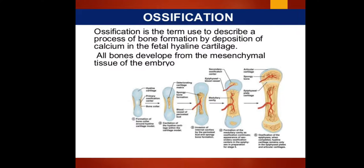Ossification is a term used to describe the process of bone formation by deposition of calcium in the fetal hyaline cartilage. All bones develop from the mesenchymal tissue of the embryo. The illustration shows the process of bone formation from its deposition of calcium in the fetal hyaline cartilage.